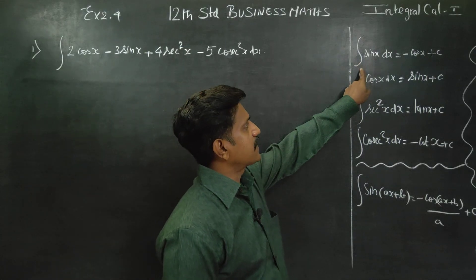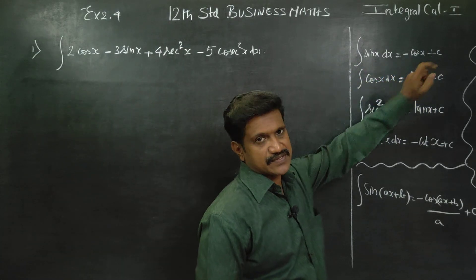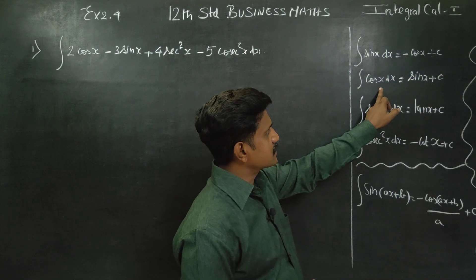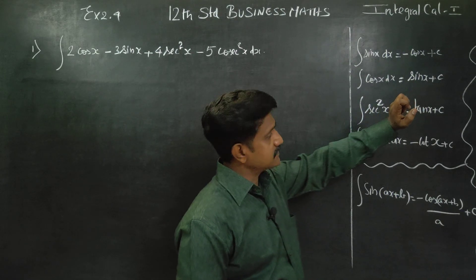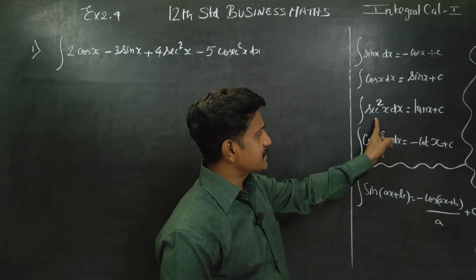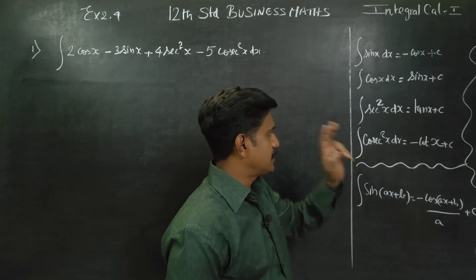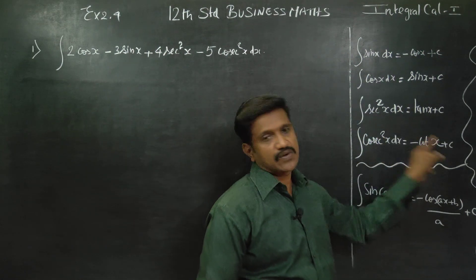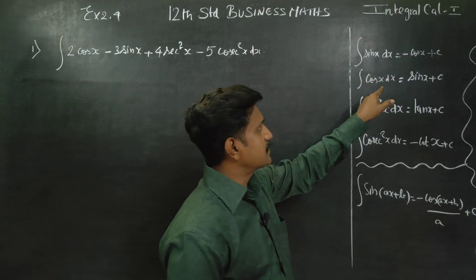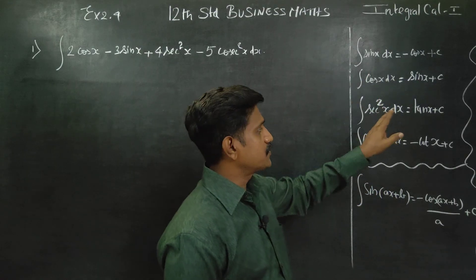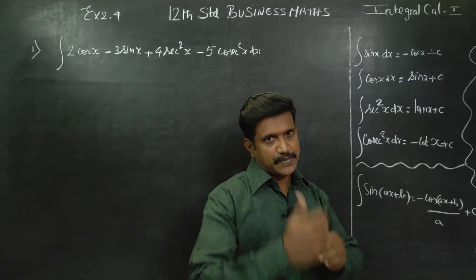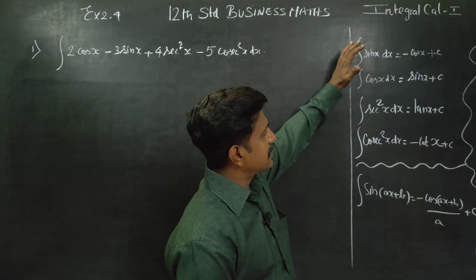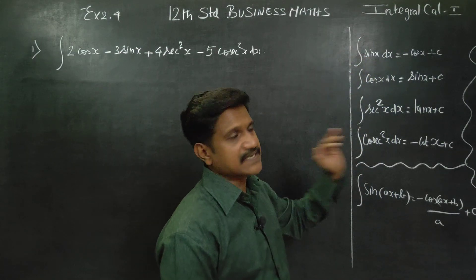Integration of sin x is given as minus cos x. Integration of cos x is tan x. Integration of cosecant square x is minus cos x. Tan is done, secant is done. It is a simple formula — these are the starting basic formulas of trigonometry.